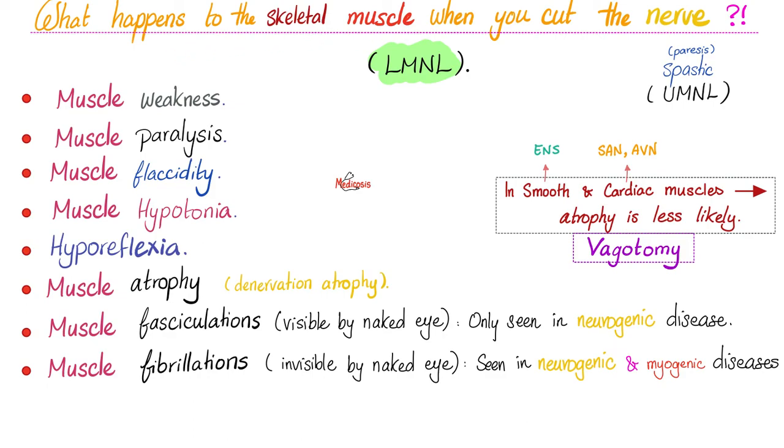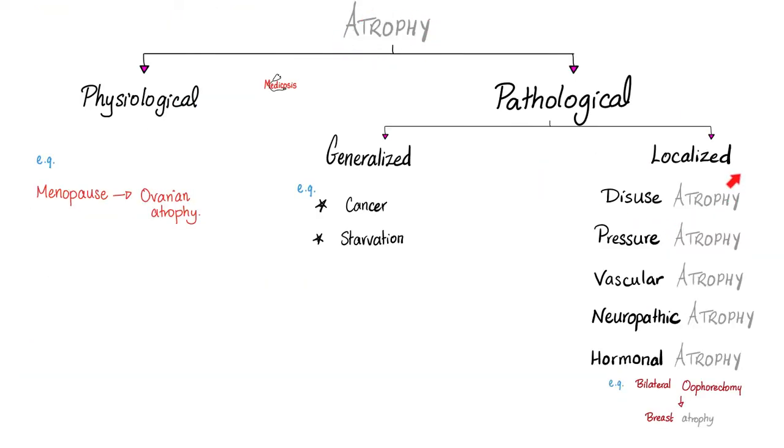The opposite is called atrophy. What happens to your muscle if we cut the nerve? Well, your muscles will get weaker because there is no stimulation: paralysis, flaccidity, hypotonia, hyporeflexia, atrophy, fasciculations, and fibrillations. The former is macroscopic, the latter is microscopic. And this specific type of muscle atrophy is known as disuse atrophy, which is a localized pathological atrophy, because not every atrophy is pathologic.